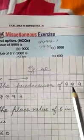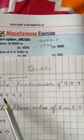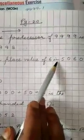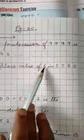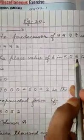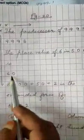Homework, 3 options are there. Choose the correct option. The predecessor of 9999 is 9998. The place value of 6 in 5060 is 60. 6 is in 10th place so answer is 60.